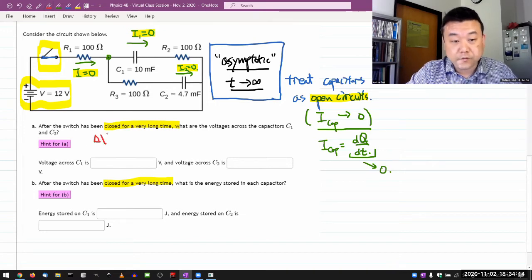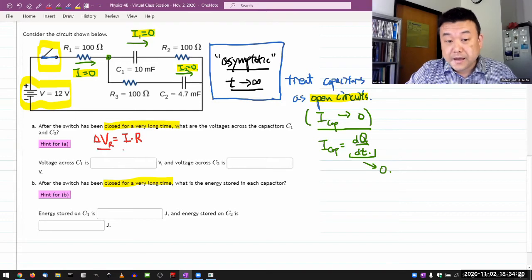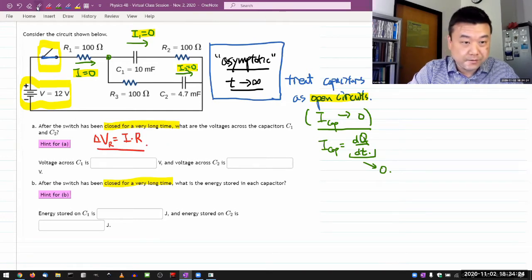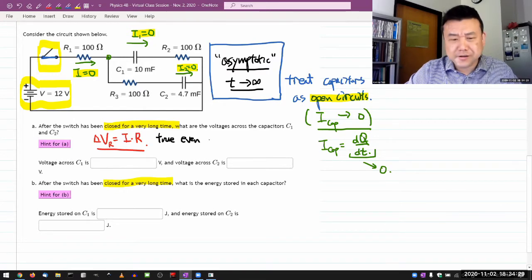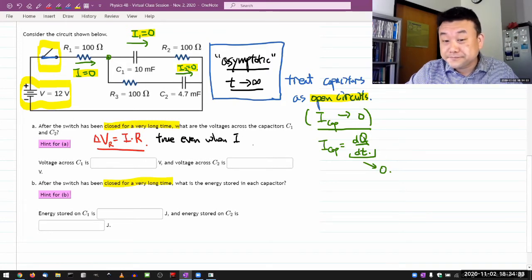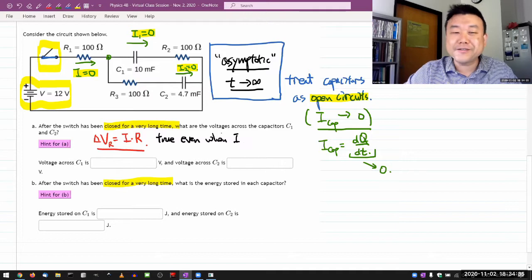Ohm's law says the change of voltage across the resistor is the current times the resistance. Ohm's law remains true, even or maybe especially when current is zero. It's an important thing to realize.